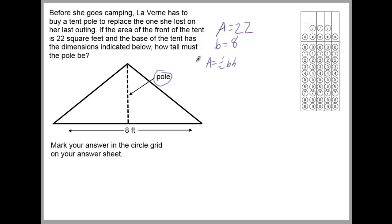Just step back and see what we know, and then realize that if we know these two numbers we can find out H — the pole, how long the pole is — because we can just plug them in and solve for H. So we know what the area is, we know what the base is — 8 — and the height we don't know, so we just keep that as H.